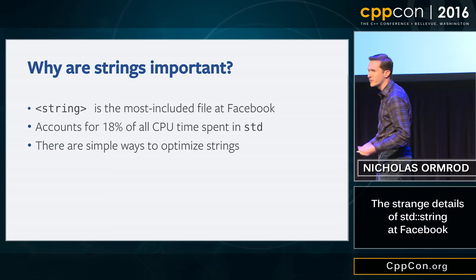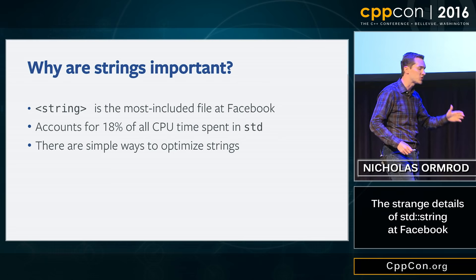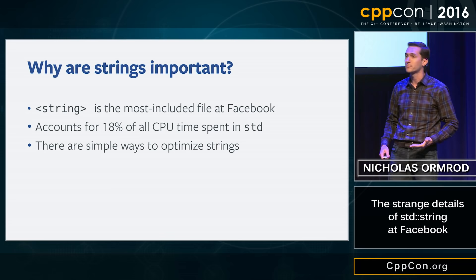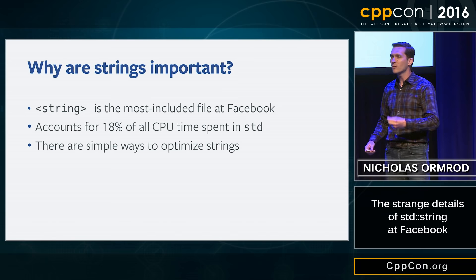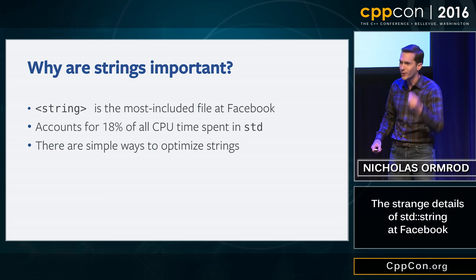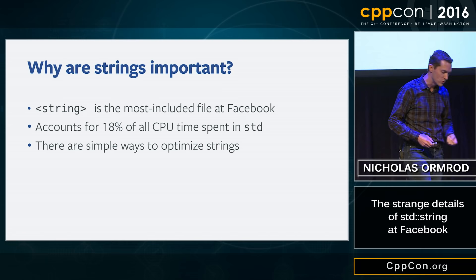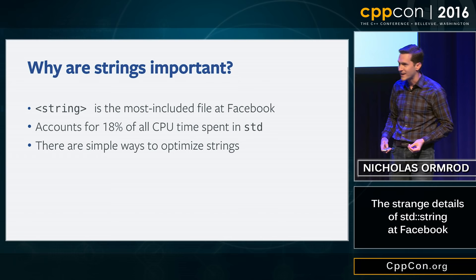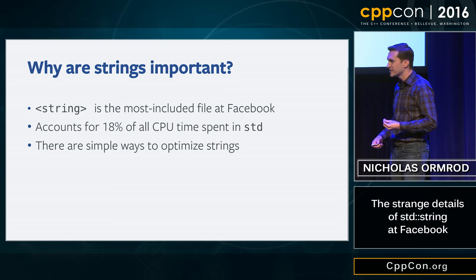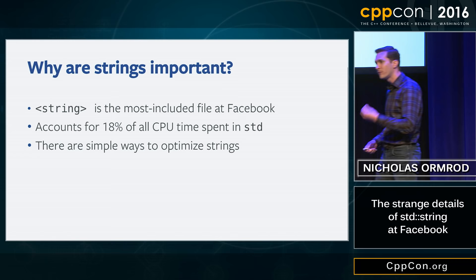The first and most important thing is that strings are important. Facebook code includes strings left, right, and center. I went on to GitHub, cloned a whole bunch of trending C++ projects, and they all use strings left, right, and center too. String is a very core abstraction that everybody uses. If you look at the CPU cycles spent inside Facebook's infrastructure, of the time spent in namespace standard, 18% of it is spent inside of string — so inside of string, we have an opportunity for impact. But before we can figure out how to make strings better, we first need to understand how they work.